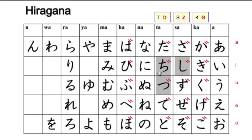You don't even have to learn the chi+ten-ten, really. And then tsu becomes 'dzu' — zu. Like, 'there are many goods in this store' — 'goodzu'. So the T column with ten-ten gives you: da, dzu, de, and do.